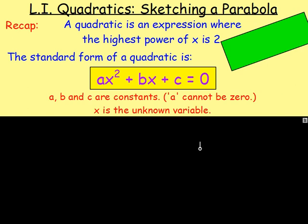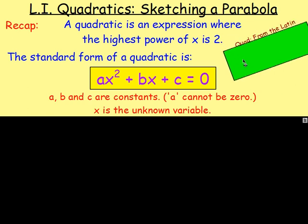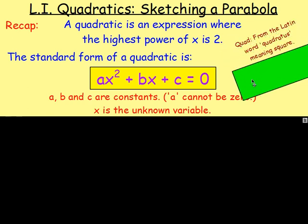Some of you may be thinking, why 'quad' for quadratics? Because quad means four. Well, actually, quad is from the Latin word 'quadratis', which means square. And obviously a square has four sides, which is where that comes from. But quadratic is an expression where the highest power of x is two, so it's going to be something squared.